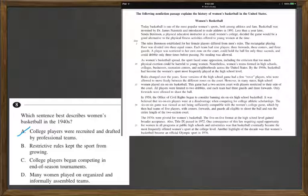B. Restrictive rules kept the sport from growing. Now actually, this passage talks quite a bit about how women's basketball was spreading rapidly in the 40s.